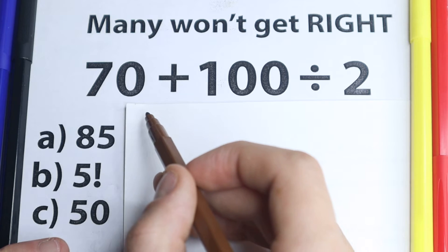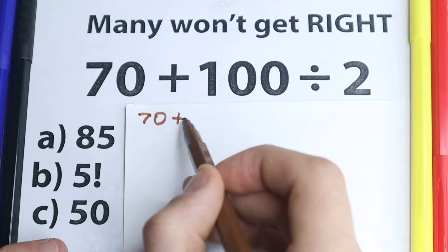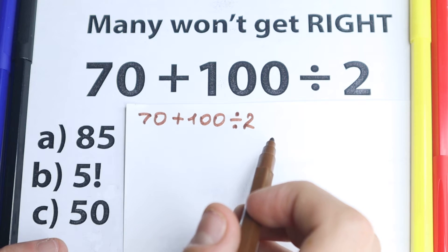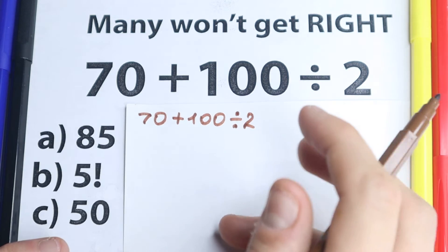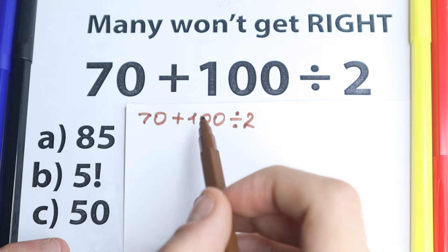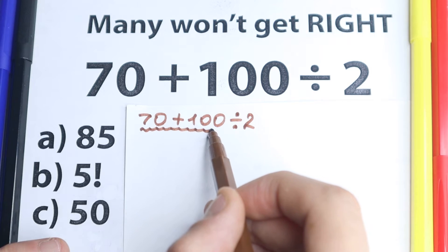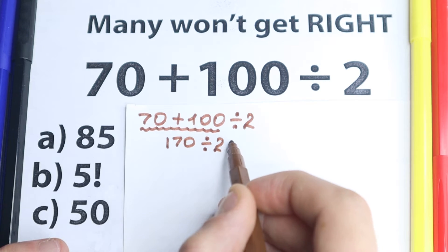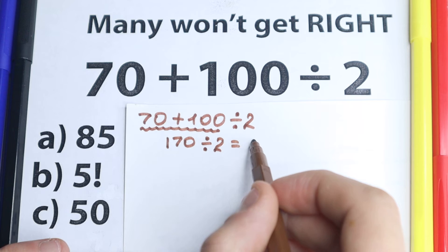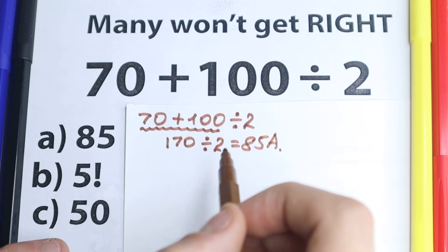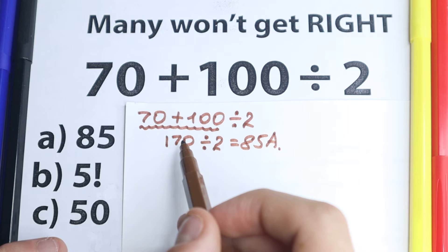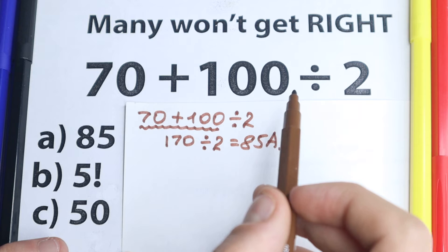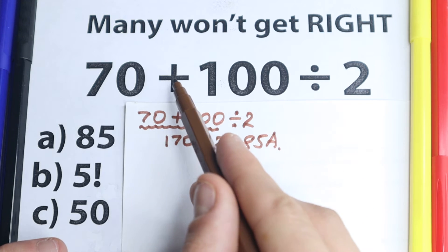So first I want to read this question and start with one solution. 70 plus 100 divided by 2. Some students solve it like this: going from left to right, 70 plus 100 equals 170, then 170 divided by 2 equals 85. That gives option A. A lot of students solve it this way — addition first, then division.